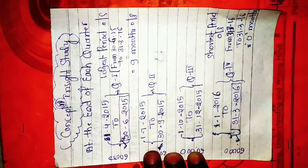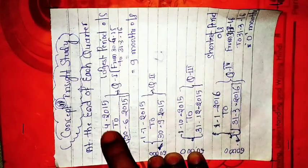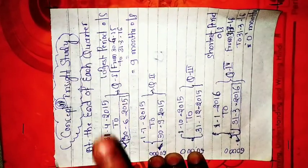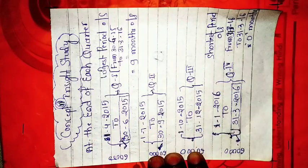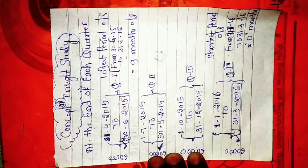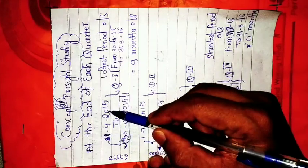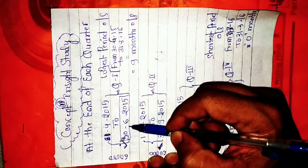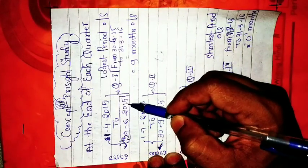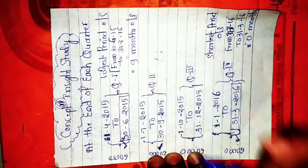In a year there are four quarters. Three months is equal to one quarter. The financial year runs from 1st April 2015 to 31st March 2016.